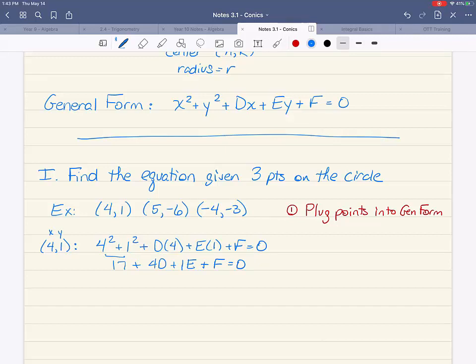So the first thing I'm going to do is combine these two together. That will be 17 plus four d plus e plus f equals zero. Now I'm going to rearrange it and put four d plus e plus f equals negative 17.